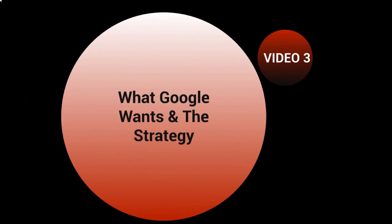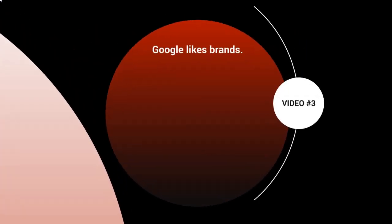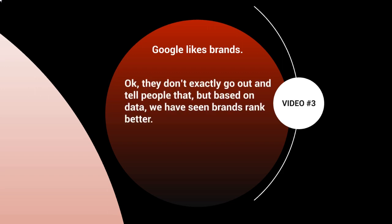Hello and welcome back. This is video number three, and this is all about what Google wants and the strategy. Based on the data that we have seen — data that has worked not only for us but for many others — Google likes brands. It's not necessarily that they like brands because brands make a lot of money, but there are certain variables that make a brand stand out. They don't exactly go out and tell people they like brands, but based on the data, we have seen brands rank better.